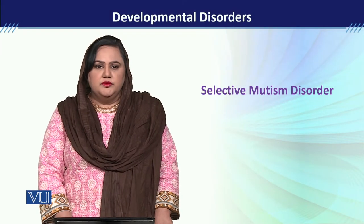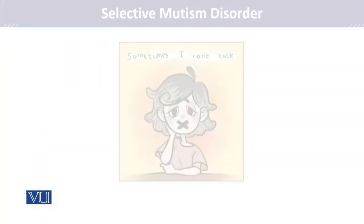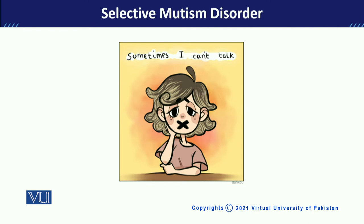Module 109: Selective Mutism Disorder. Selective Mutism Disorder is a disorder in which a child is able to communicate in certain social situations but is unable to communicate in other social situations. Usually this disorder manifests before the age of 5, but it is often not recognized until the child starts school and begins participating in different academic activities.